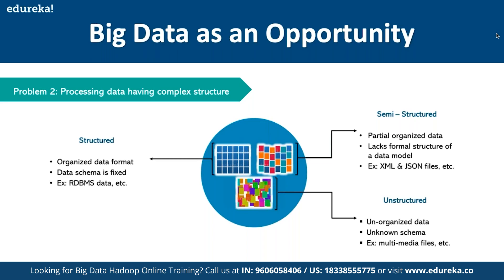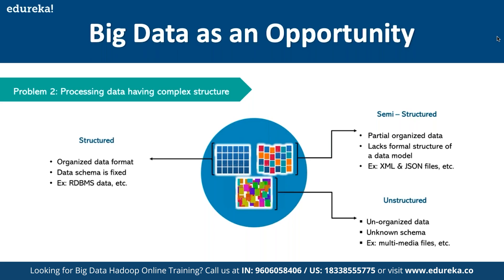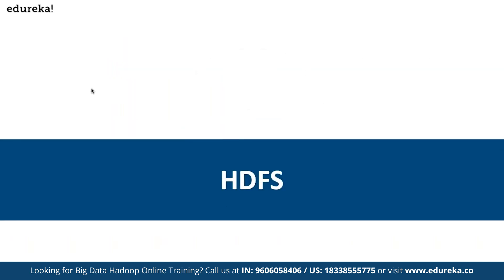Hadoop is offered as a solution. Hadoop allows us to dump any kind of data across a cluster. Hadoop has two main core components: HDFS, which stands for Hadoop Distributed File System, and MapReduce, which handles processing. MapReduce allows us to parallelly process data stored in HDFS. It is also used in combination with technologies like Spark, which provides real-time stream processing.